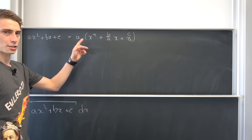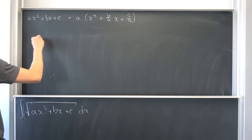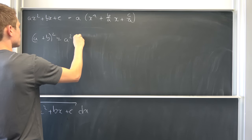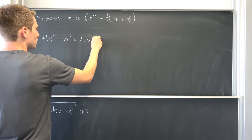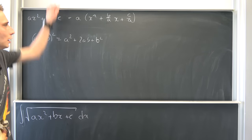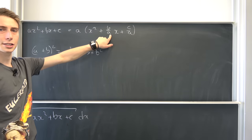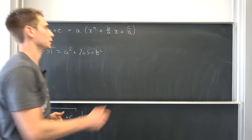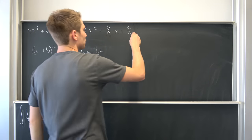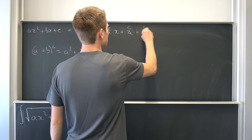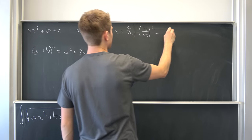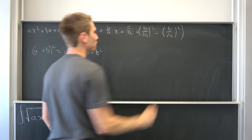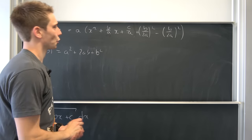Just like with the tangent one, we could use the binomial formula. So (a + b)² is nothing but a² + 2ab + b². All that's really missing right here is to add a factor of (b over 2a)² whole thing squared and subtract it right again. So we add (b over 2a)² and subtract it. I hope you can see where this came from — I already made a video on this topic.